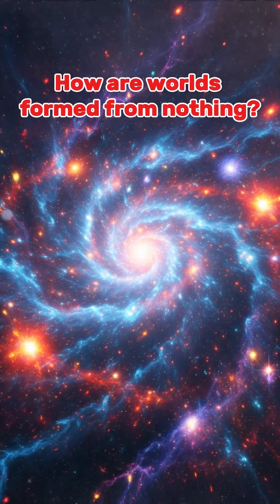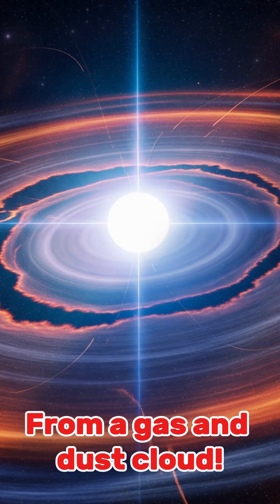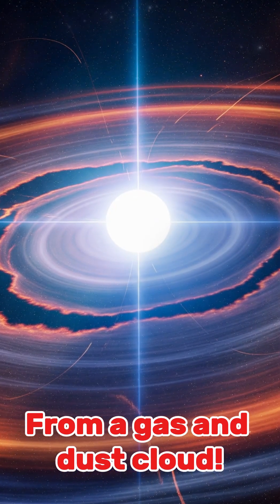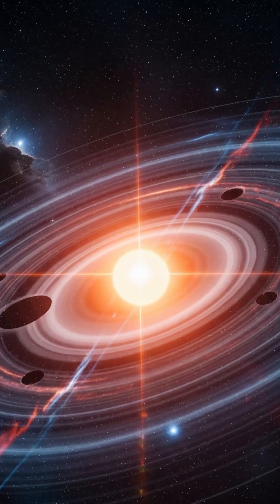Have you ever wondered how planets are born? It all starts with a giant cloud of gas and dust that orbits a young star, forming a so-called protoplanetary disk.